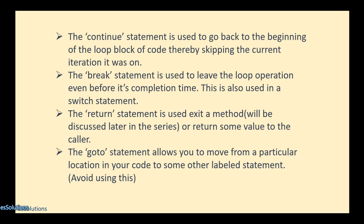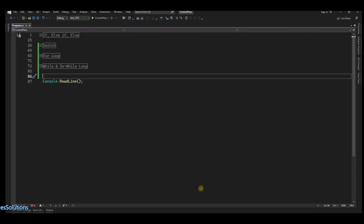We also have the return statement. We will not talk about this here because when we're talking about methods and functions, that is where we'll be using it — the return keyword actually makes more sense in that context. And we have the last one, which is the goto statement, and this allows you to move from a particular location in your code to some other labeled statement. So let's go to code and look at how we could do all of this.